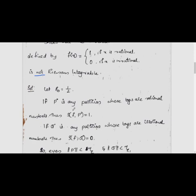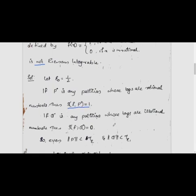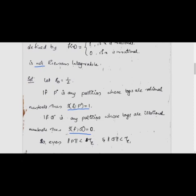If P̊ is any tagged partition whose tags are rational numbers, then f evaluated at rational tags equals 1, so S(f, P̊) = 1. Similarly, Q̊ is a partition whose tags are irrational numbers, so f evaluates to 0, giving S(f, Q̊) = 0.